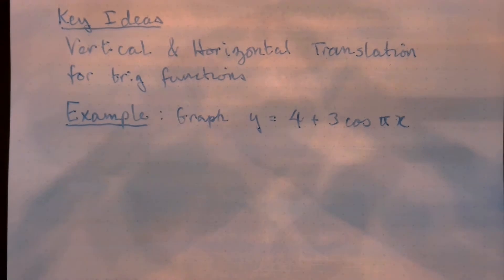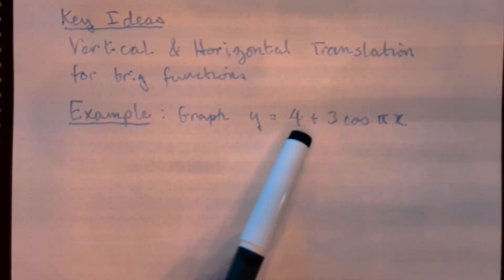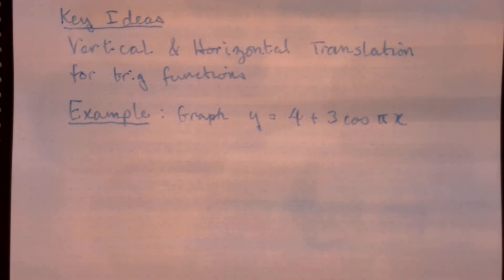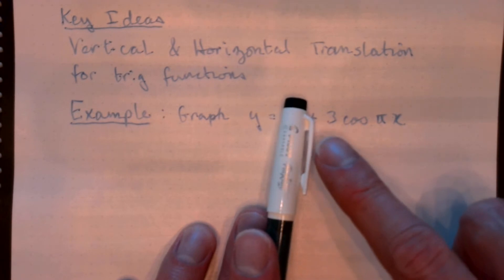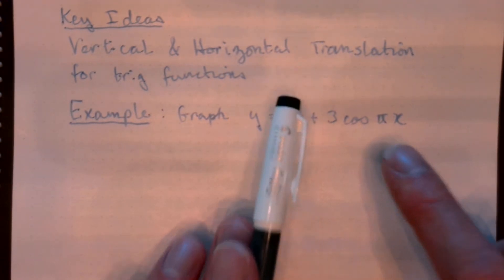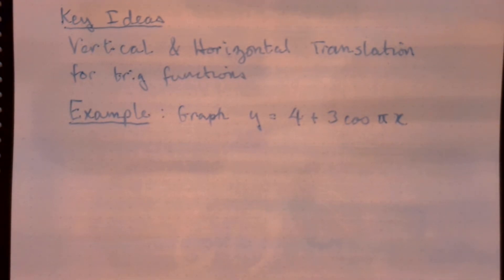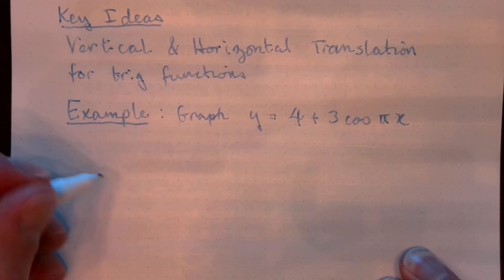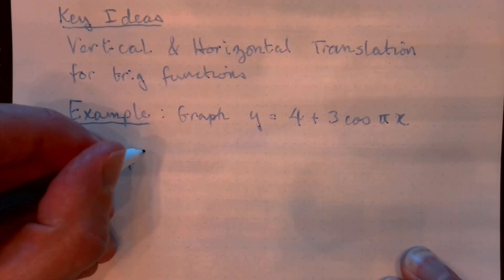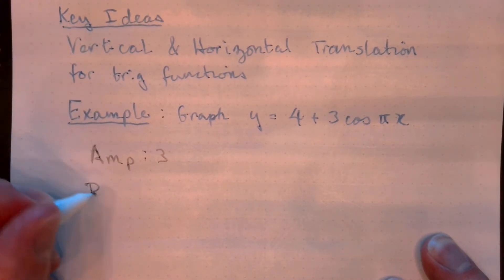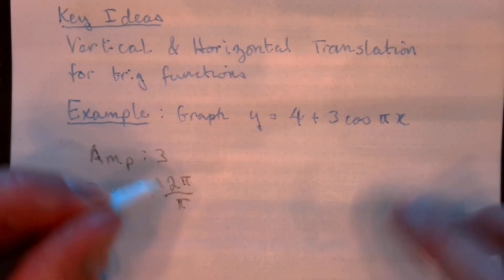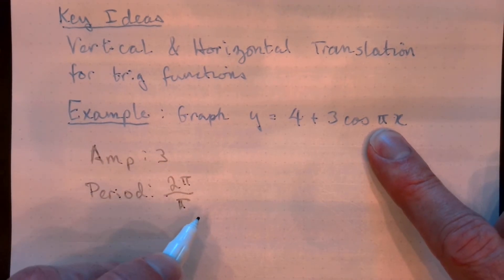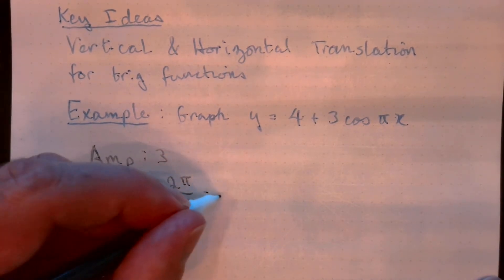We are going to graph this function right here: 4 plus 3 cosine pi x. If we didn't have the 4 here, we actually know how to deal with this part. The amplitude of the function is 3, and then we can use this multiplier to help us get the period of the function. So let's start writing some of that down. Our amplitude is 3 and the period would be 2 pi over this multiplier right here. Remember that this multiplier is not the period, but it helps you get the period. So the period is 2.